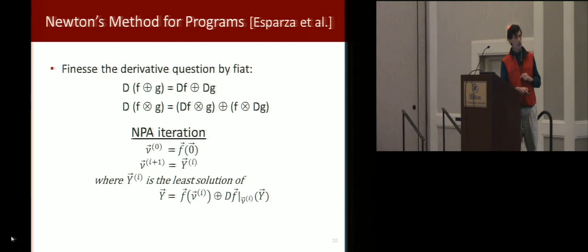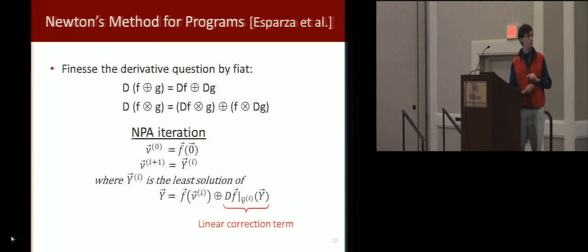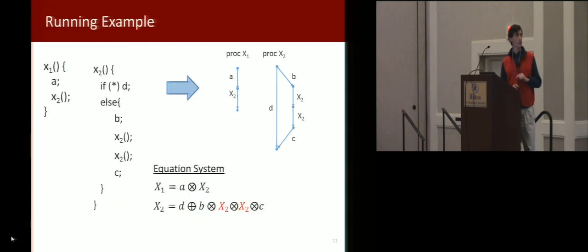And the Newtonian iterates are created by setting up, using that derivative operator, or really it's a differential operator, to set up this equation system. This is the linear model. I'll show you why it's linear in a second. And the least solution of this equation system is the value that you use on the next iteration. So that's the linear correction term.